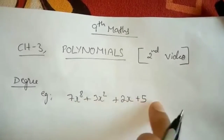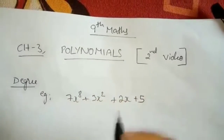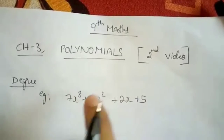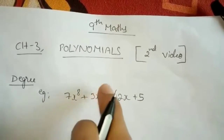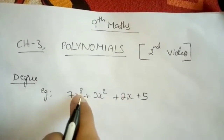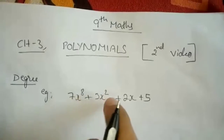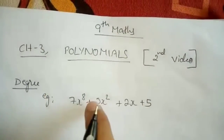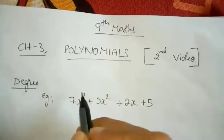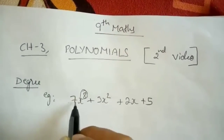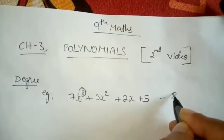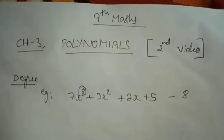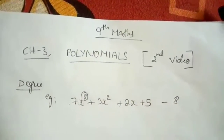This is one polynomial in one variable — only X is there. So, polynomial in one variable. You have to see the power of that X. Here the powers are 8, 2, and 1. So the highest of those powers is 8. The degree of this polynomial becomes 8. Highest power of that polynomial is called degree.